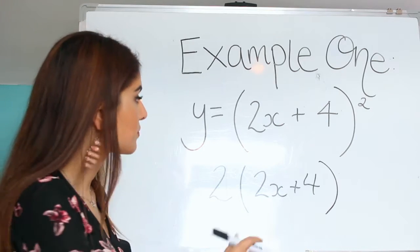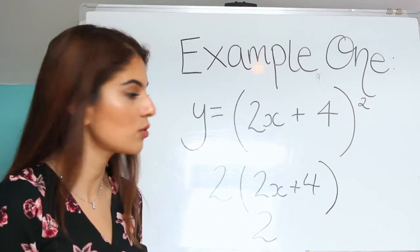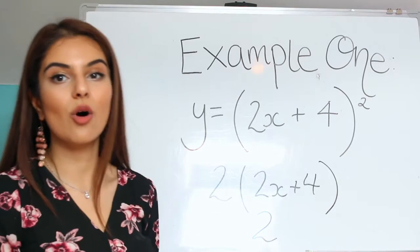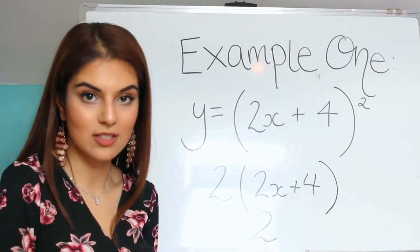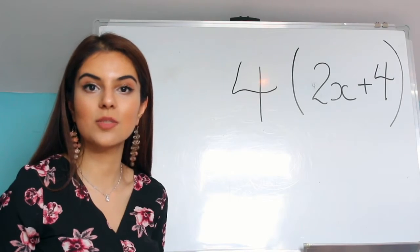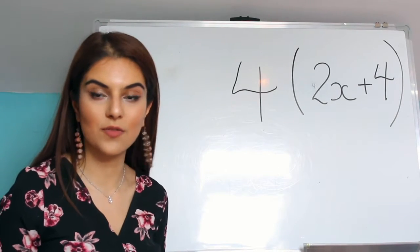For differentiation, the constant just goes. So that would just be 2. Now all we need to do is times the 2 functions together. So the answer would just be 4 brackets 2x plus 4.